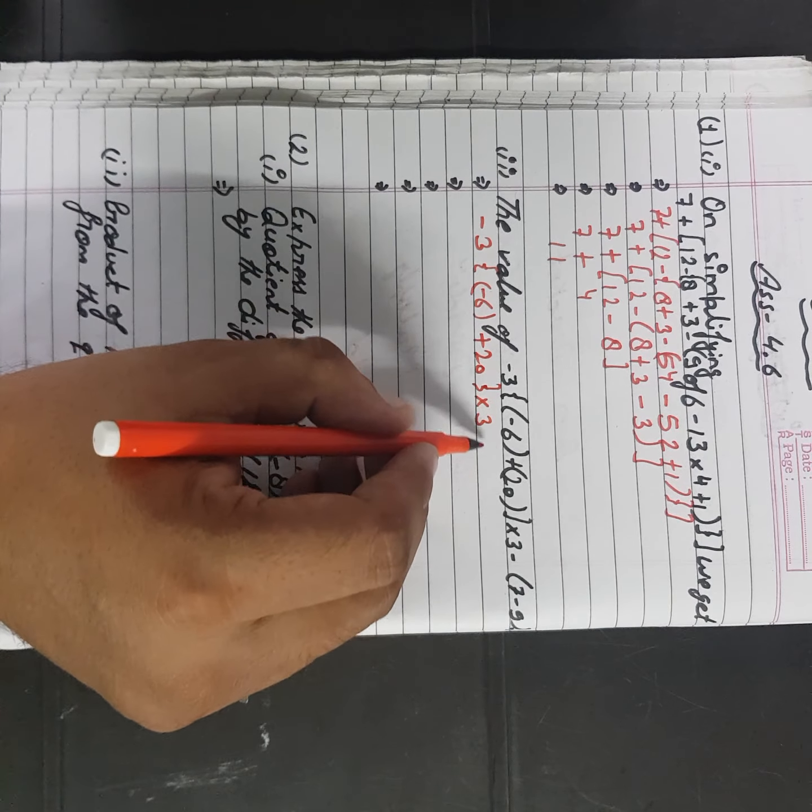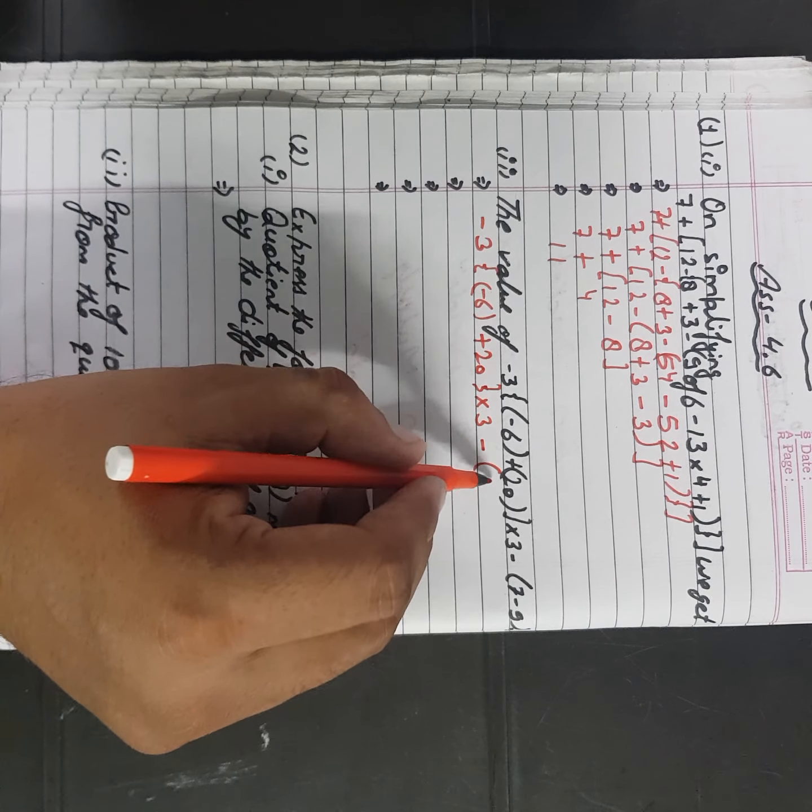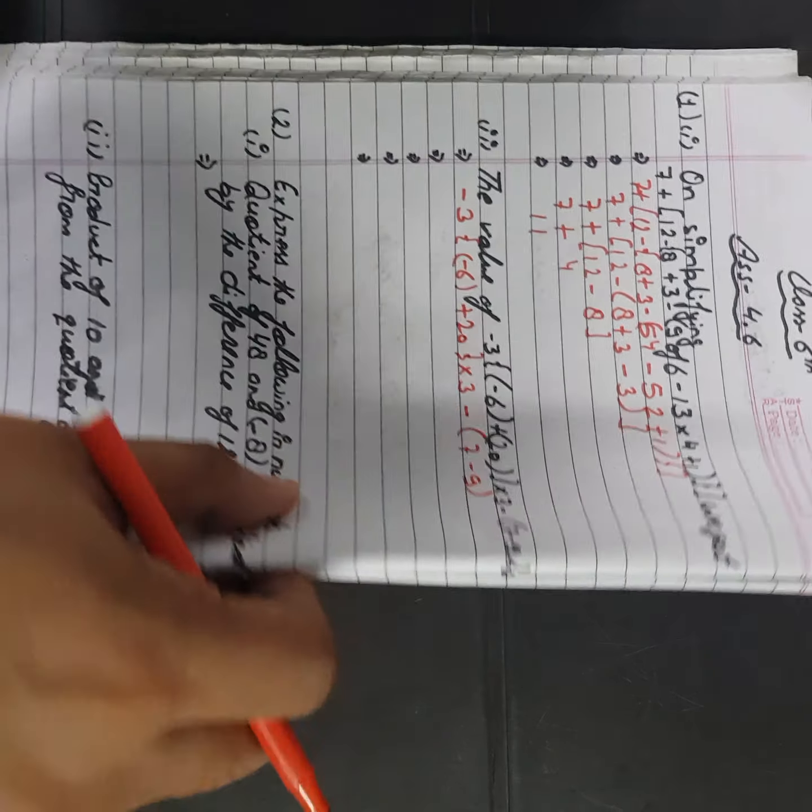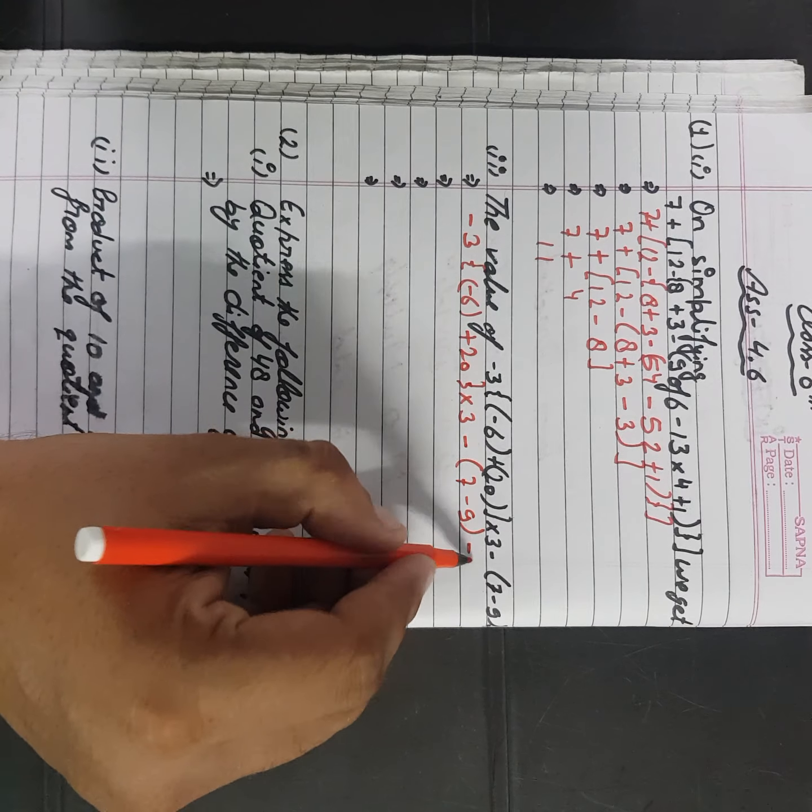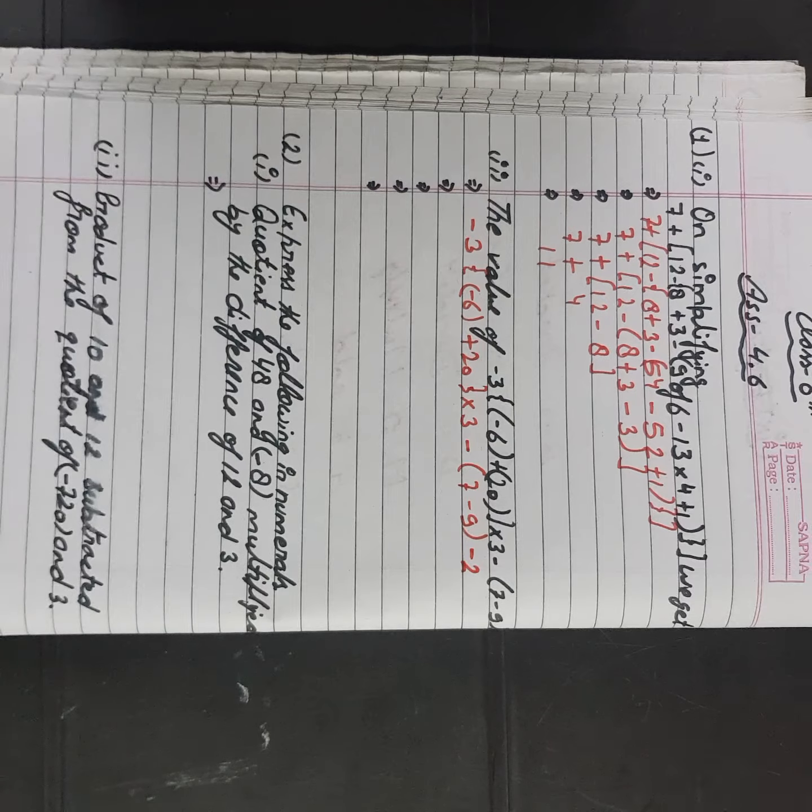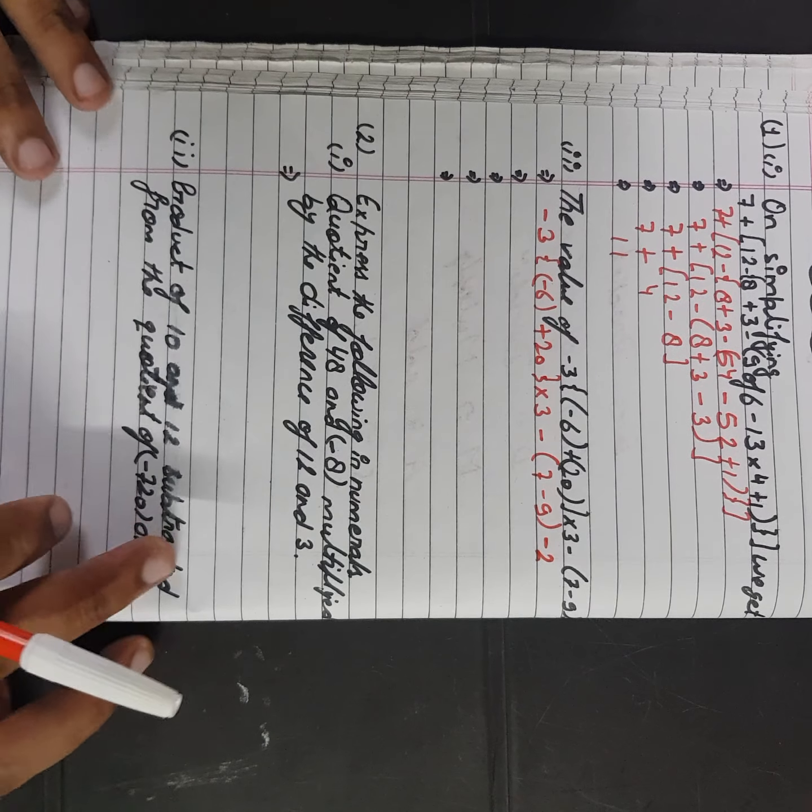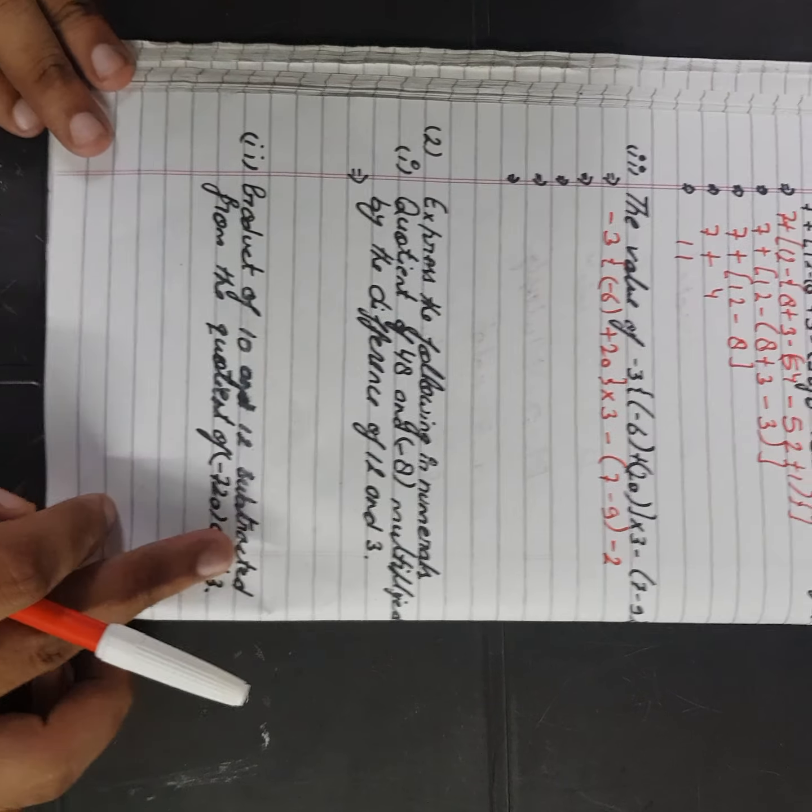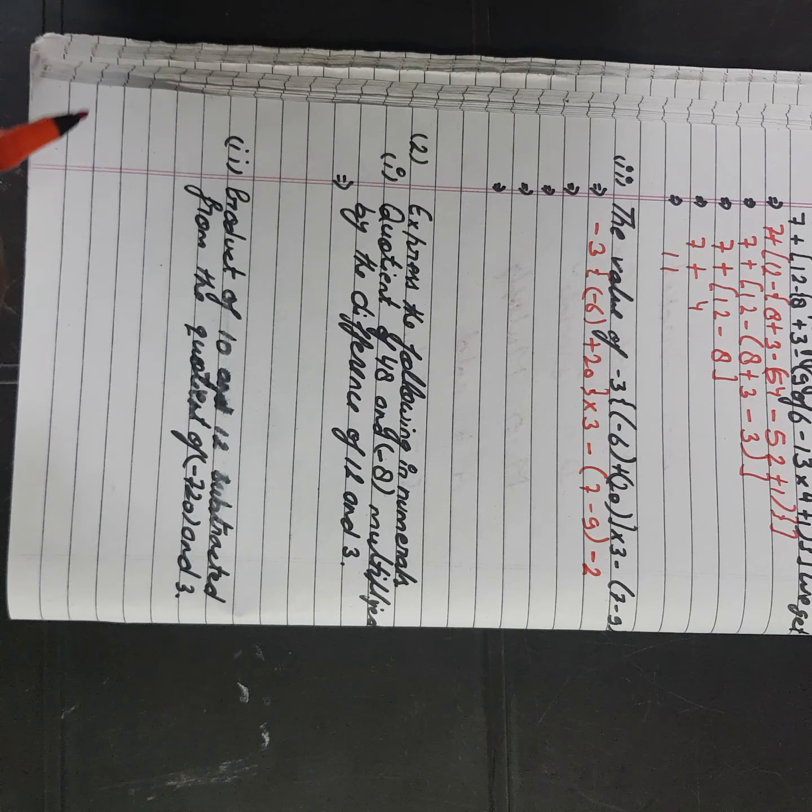Now try this one yourself. Express the following numbers in numerical forms. Numerical form, jaha kaha gaya usko numbers me express karna hai. Question of 48 and minus 8 multiplied by the difference of 12 and 3.